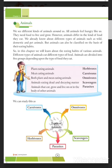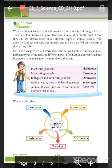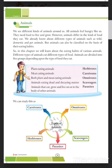We already know about different types of animals such as wild, domestic, and pet animals. Animals can also be classified on the basis of their eating habits. In this chapter we will learn about the eating habits of various animals. Animals are divided into five groups depending upon the type of food they eat.